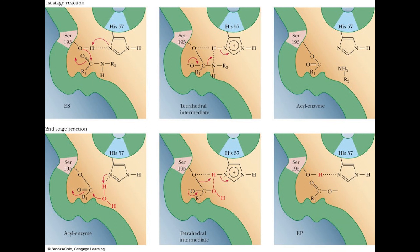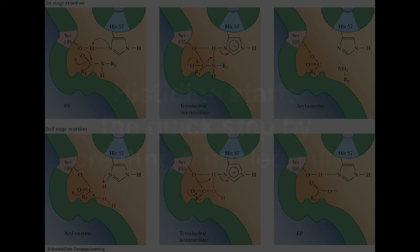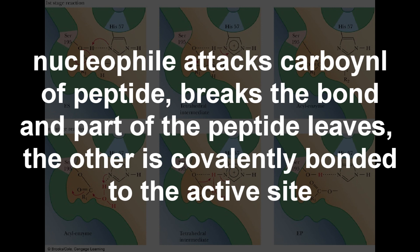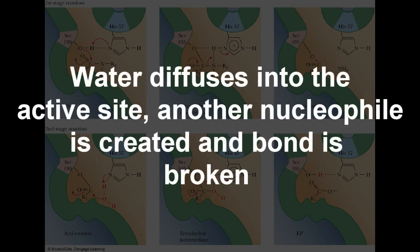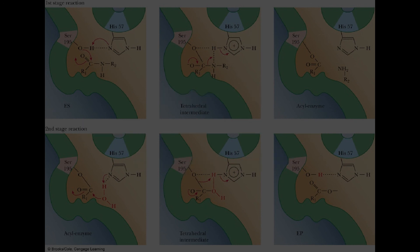The key items to take away: we have the catalytic triad, which works together to create a nucleophile by the proper binding of the substrate to the active site. Histidine starts this by pulling the proton from serine. It's going to attack the carbonyl carbon of the tetrahedral intermediate — that's the quick step. Half of the peptide is going to leave; half remains covalently bonded. We wait for water to diffuse in, creating a second nucleophile which attacks the carbonyl carbon again, breaking the bond and letting it go. Then we have the enzyme regenerated. That's how the chymotrypsin active site works.